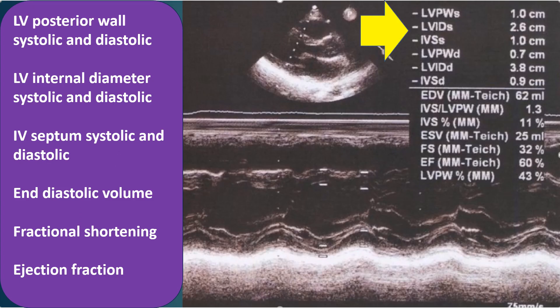Important measurements taken are: LVPWS (left ventricular posterior wall systolic), LVIDS (left ventricular internal dimension systolic), IVSS (interventricular septum systolic), LVPWD (left ventricular posterior wall diastolic), IVSD (interventricular septum diastolic), EDV (end-diastolic volume), ESV (end-systolic volume).